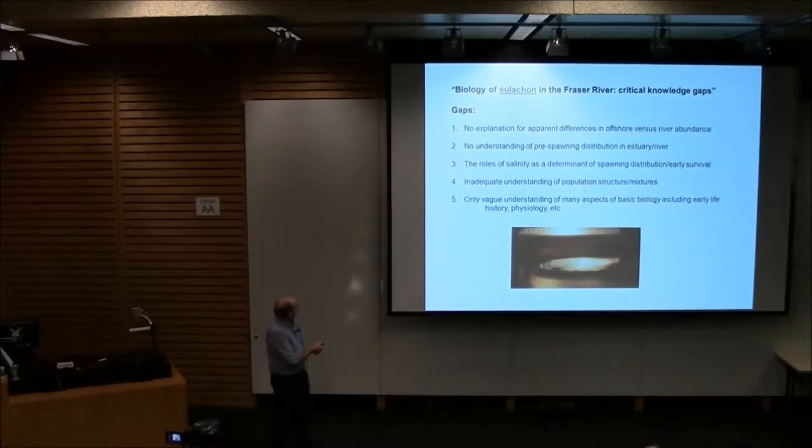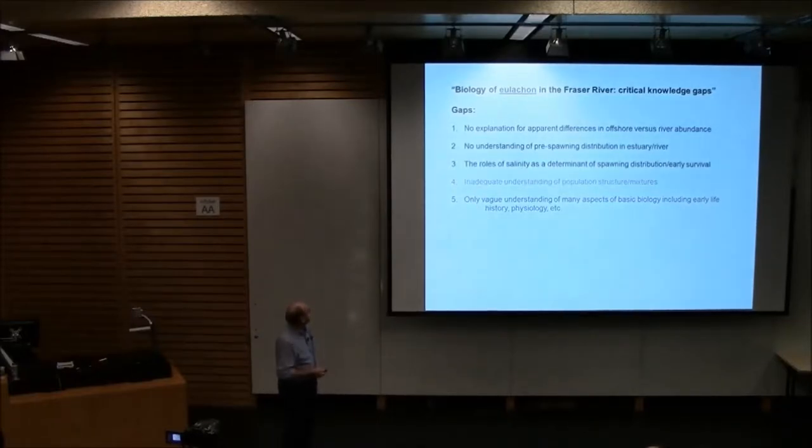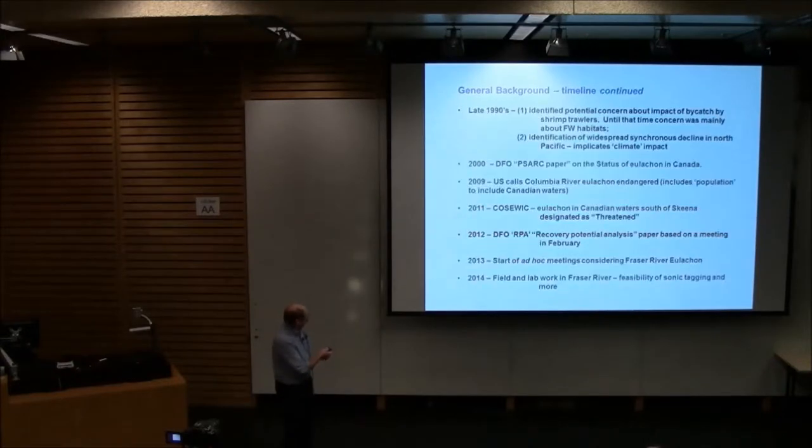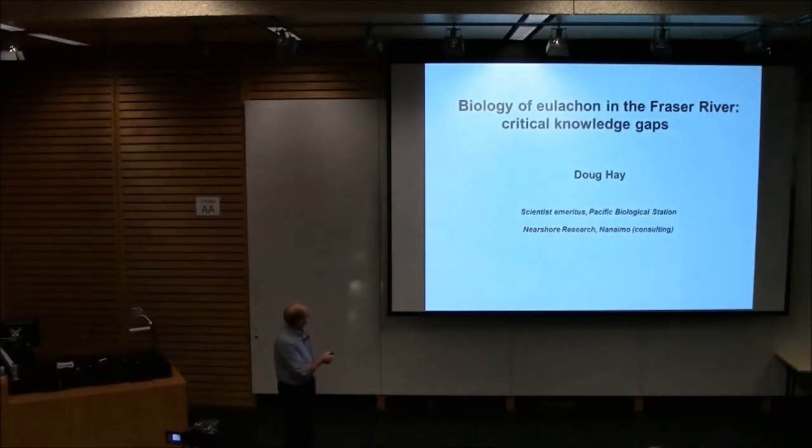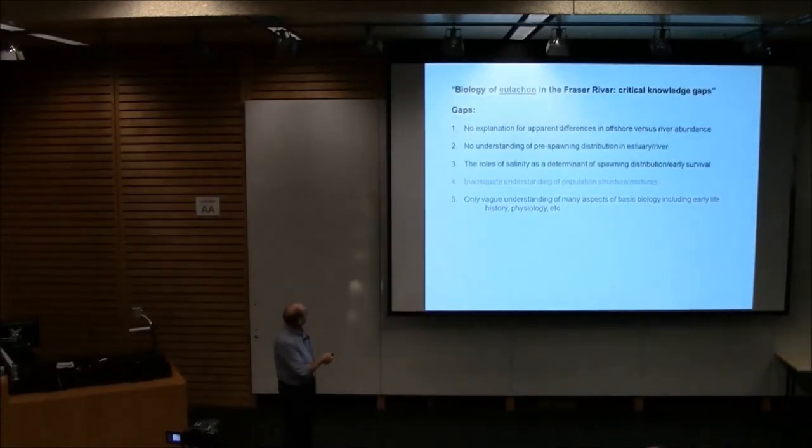The third one is the role of salinity. Hooligan are marine fish that spawn in fresh water, part of a smelt family that have a capacity to live in both environments. They might be using some low-salinity waters for spawning, and if they are, some of our assessment methodologies are flawed. These are two other major knowledge gaps: population structure. I'm not going to talk about those today, but that list could be expanded.